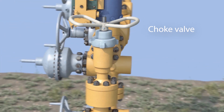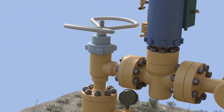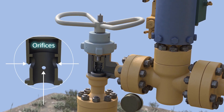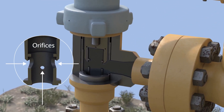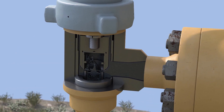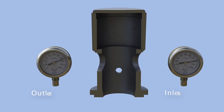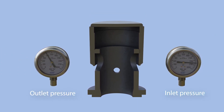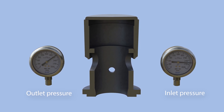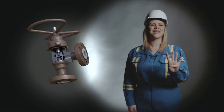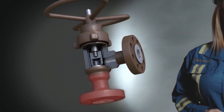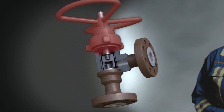The choke valve is designed to take the brunt of the pressure off of the line components, increasing their life and yielding significant benefits. By restricting the flow to a very small opening or orifice, choke valves reduce well pressure and control production rate, creating downstream or back pressure. There are four main elements of concern in a choke valve: inlet, outlet, trim and throttling mechanism.